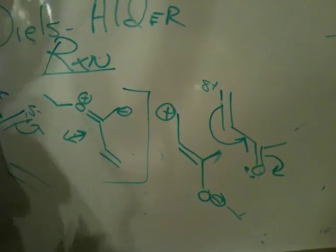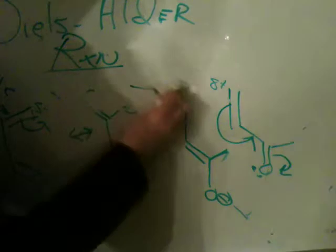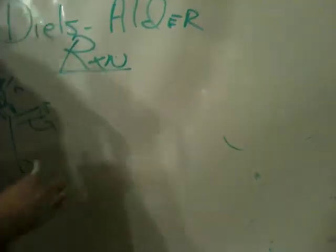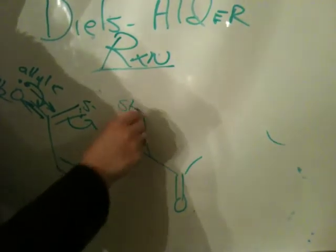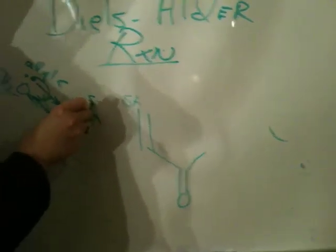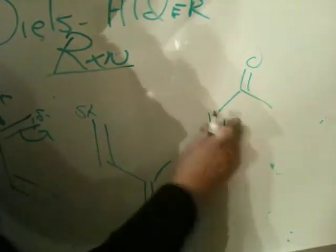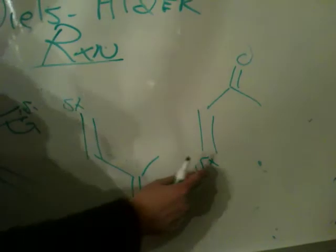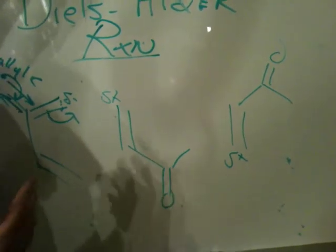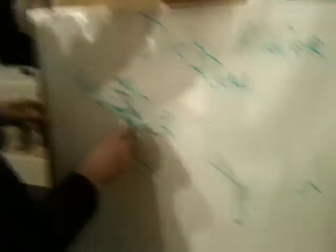That being the case, it would be more logical to line this piece up here — the delta plus lined up with the delta minus. The other alignment would put the delta plus far from the delta minus. So the way these are going to line up is so that their dipoles are complementary: delta minus with delta plus. And this alignment you will see leads to the para product.